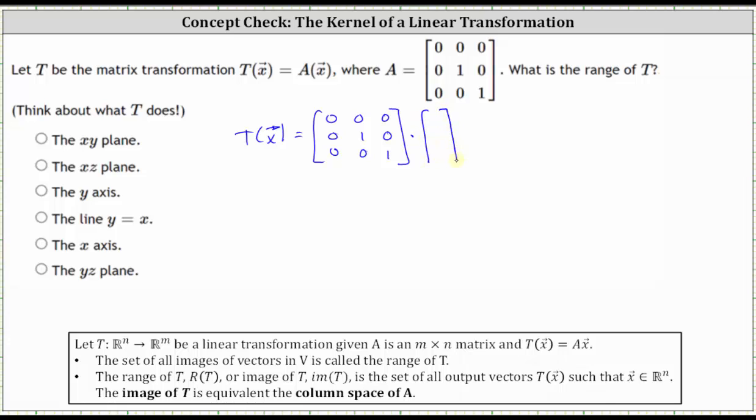Let's let the vector X in R^3 be the vector (X, Y, Z). And now let's find the product. Multiplying the first row by the column matrix, we get zero. Multiplying the second row by the column matrix, we get Y. And multiplying the third row by the column matrix, we get Z.